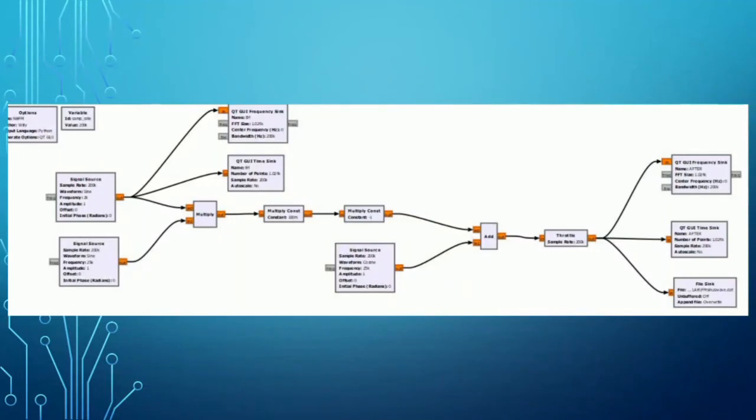Welcome to the second part of the experiment, which is narrowband frequency modulation. The first task is designing a circuit for narrowband FM. Narrowband FM is an FM signal with a small modulation index less than 0.2 — in this case we are using 0.1, shown here as 100 milli. We are using a sampling rate of 200 kilohertz, a carrier frequency of 25 kilohertz, and a modulating frequency of 5 kilohertz.